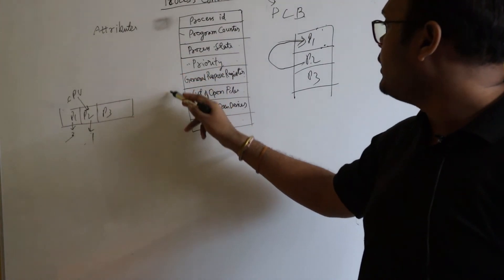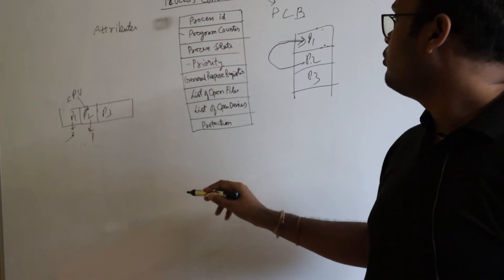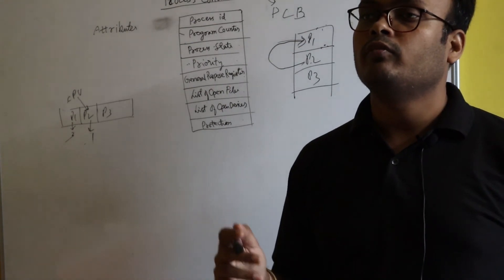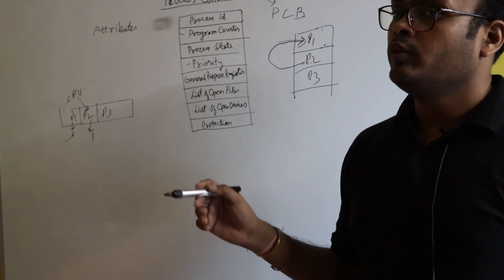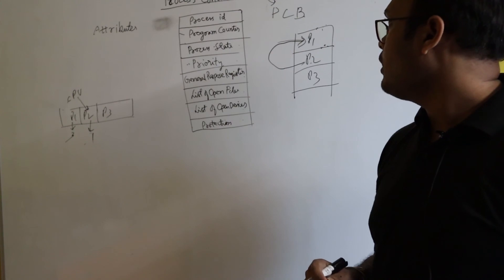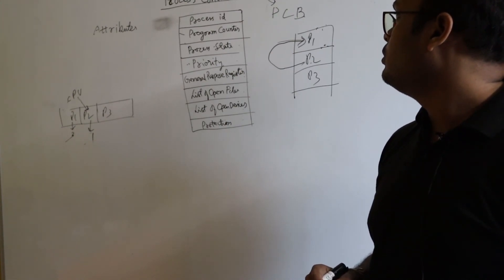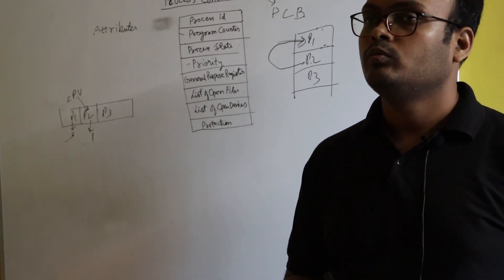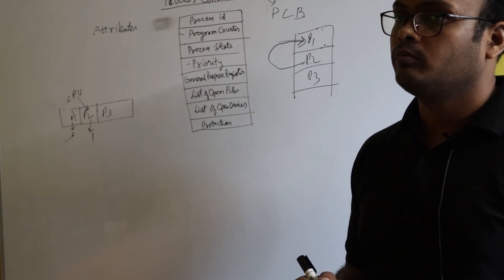These are all the attributes of the Process Control Block. From these attributes, you can easily identify which process it is. Now I will move on to the process state diagram.